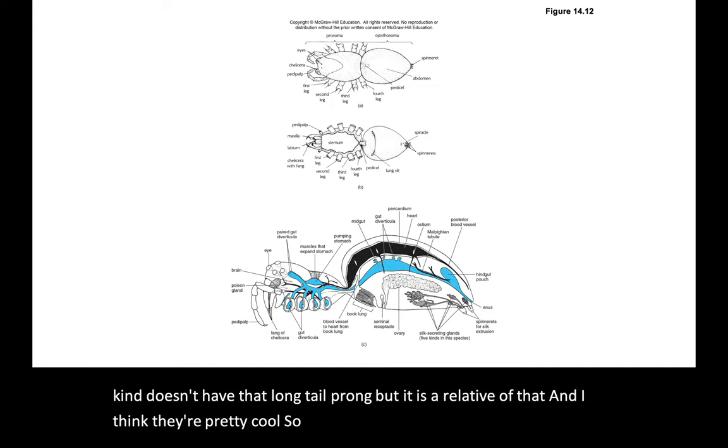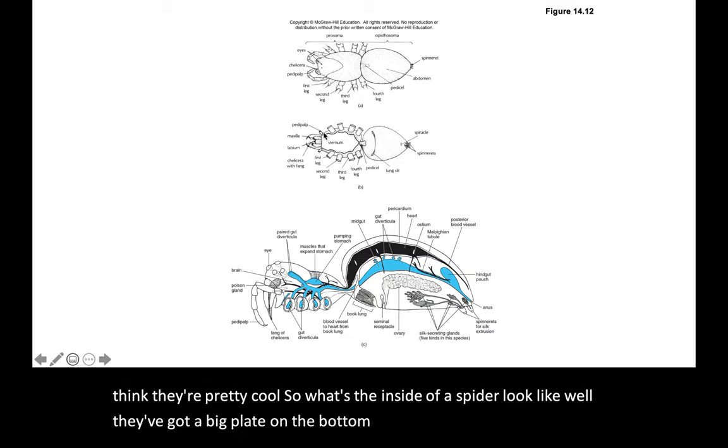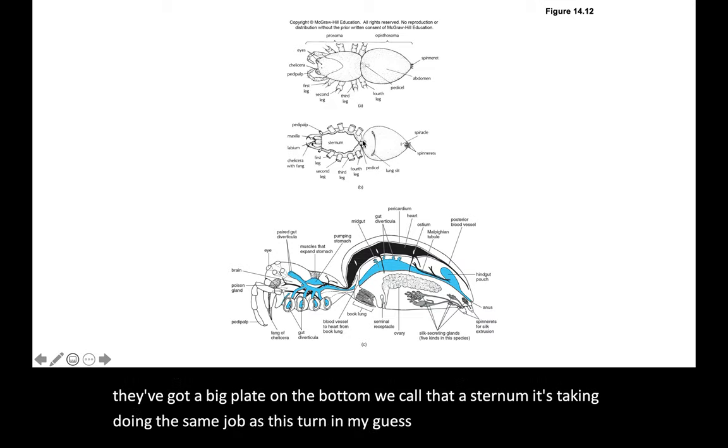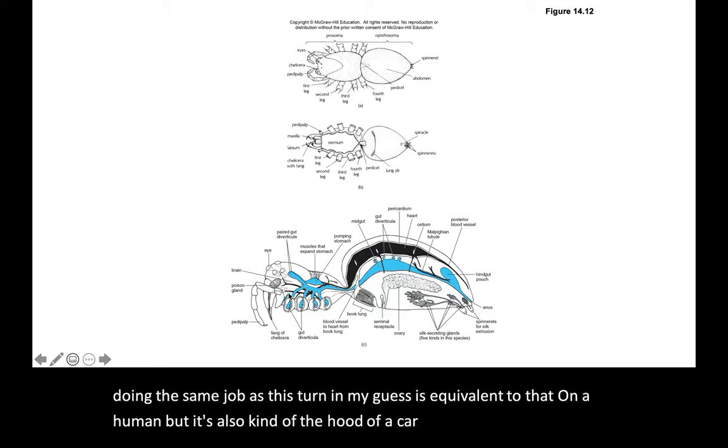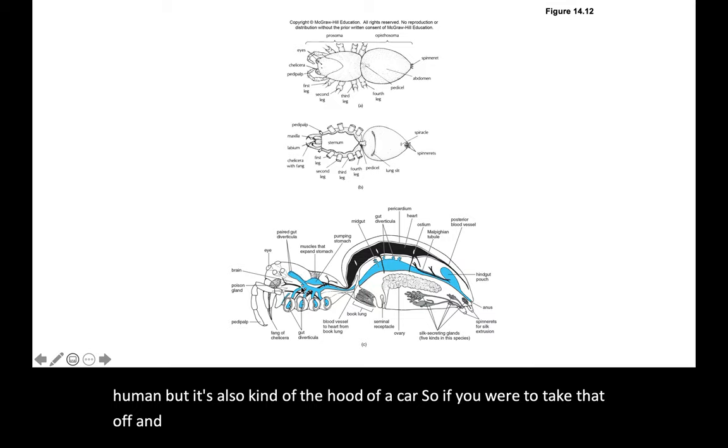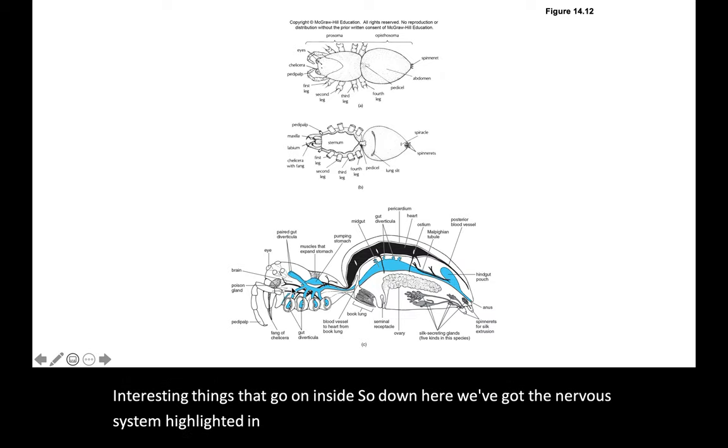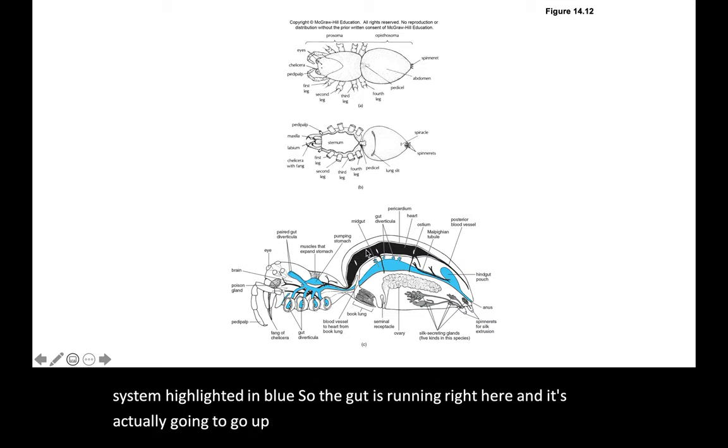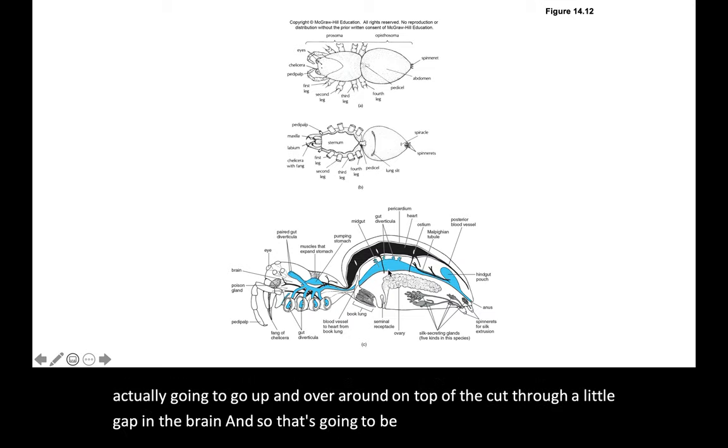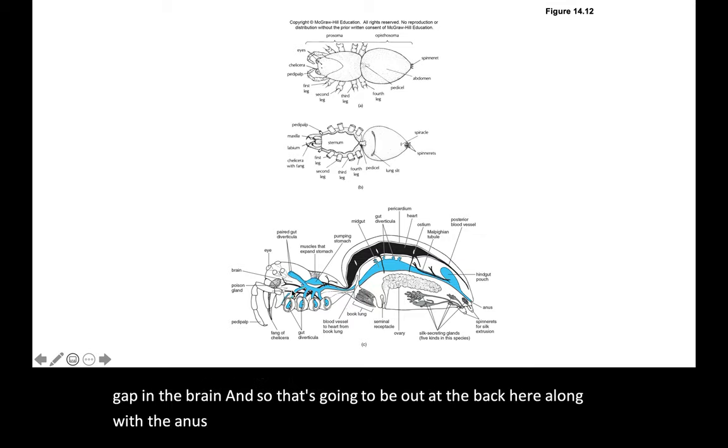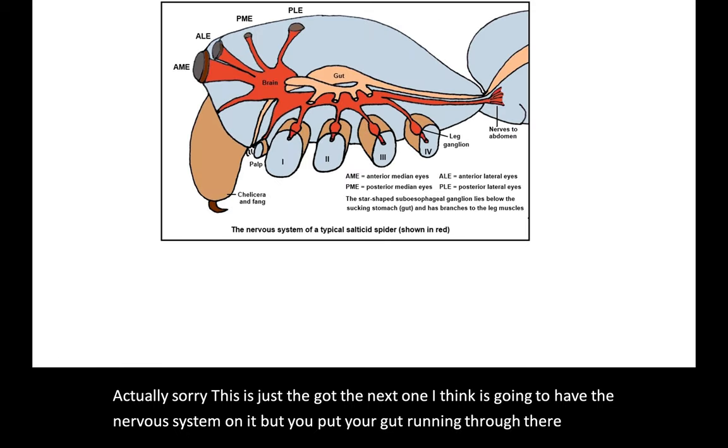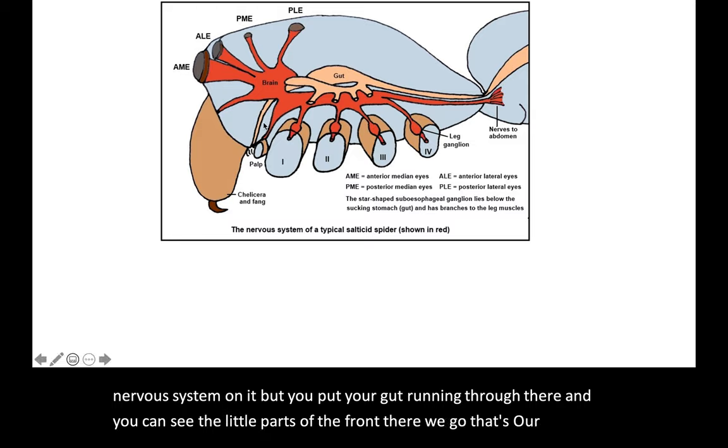So what's the inside of a spider look like? Well, they've got a big plate on the bottom. We call that a sternum. It's equivalent to that on a human. But it's also kind of like the hood of a car. So if you were to take that off, then you could see all the interesting things that go on inside. Down here, we've got the nervous system highlighted in blue. So the gut is running right here and it's actually going to go up and over and around on top, kind of through a little gap in the brain.